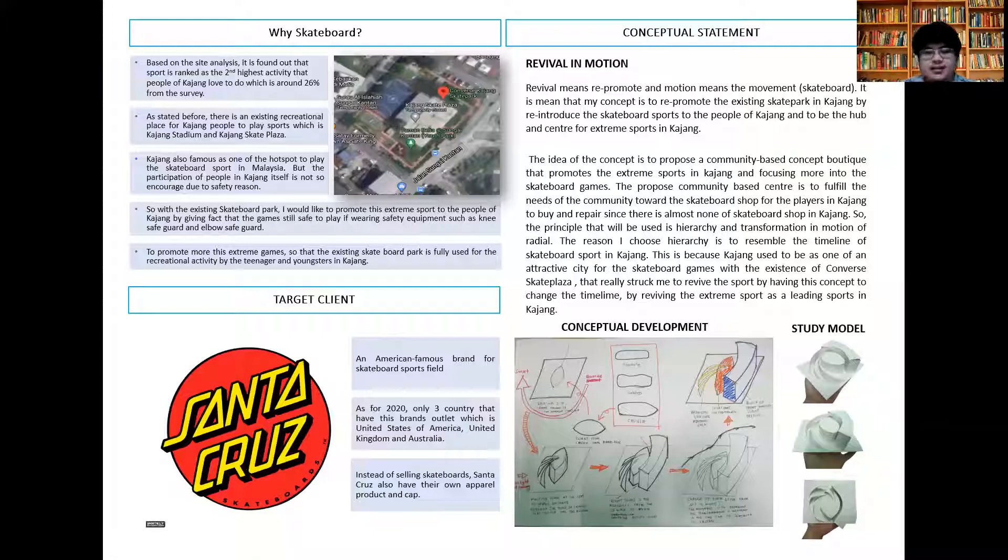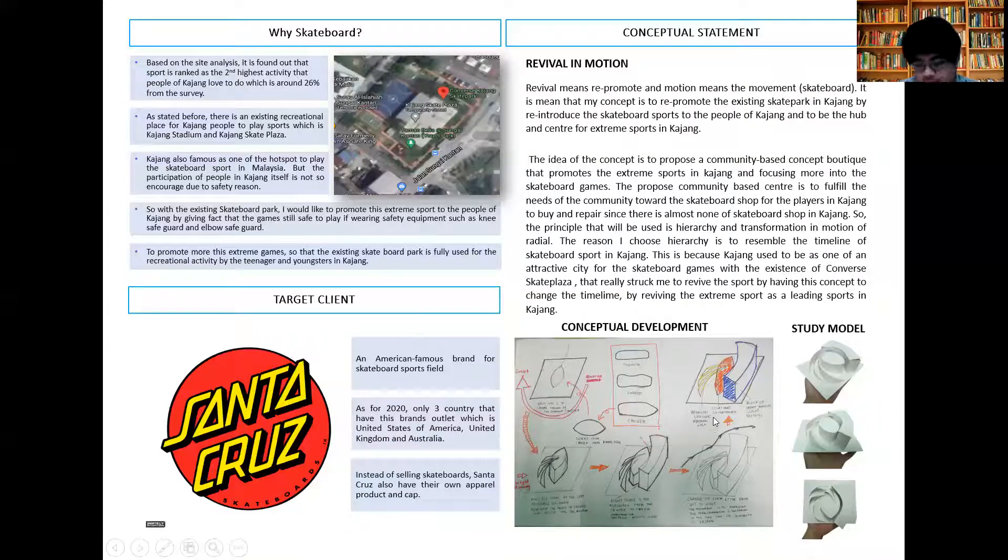The right shape of the building is the reflection from the center to create purpose and activity for the client, which is Santa Cruz. The change of form here shows the movement to represent the transformation and hierarchy in the timeline of skateboards in Kajang.